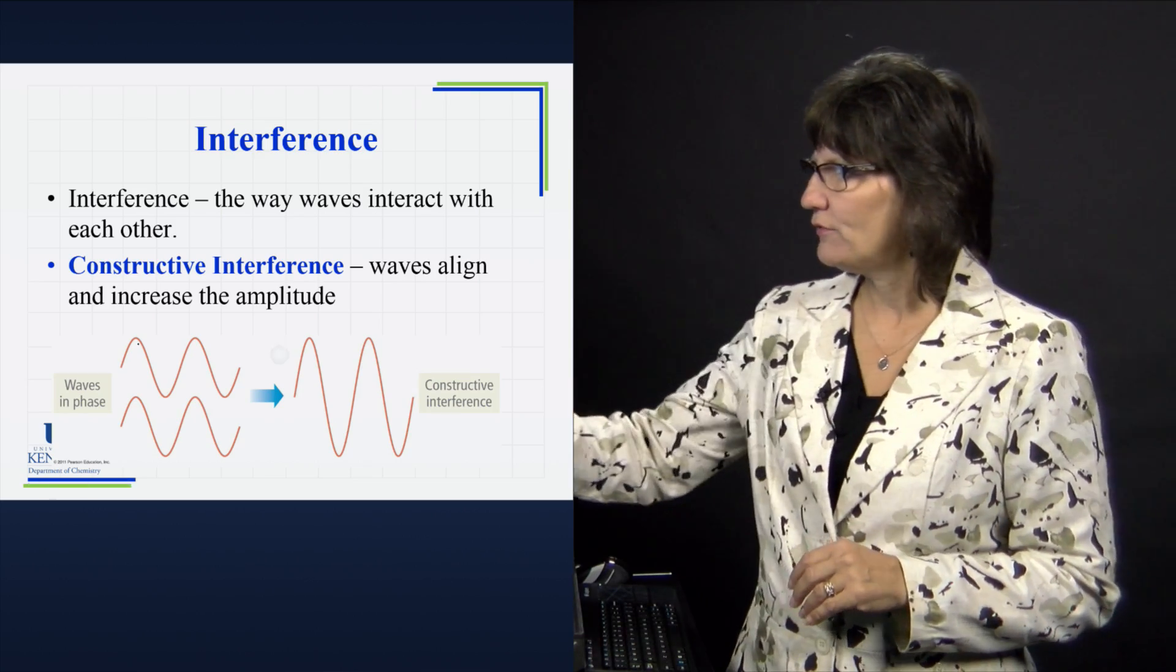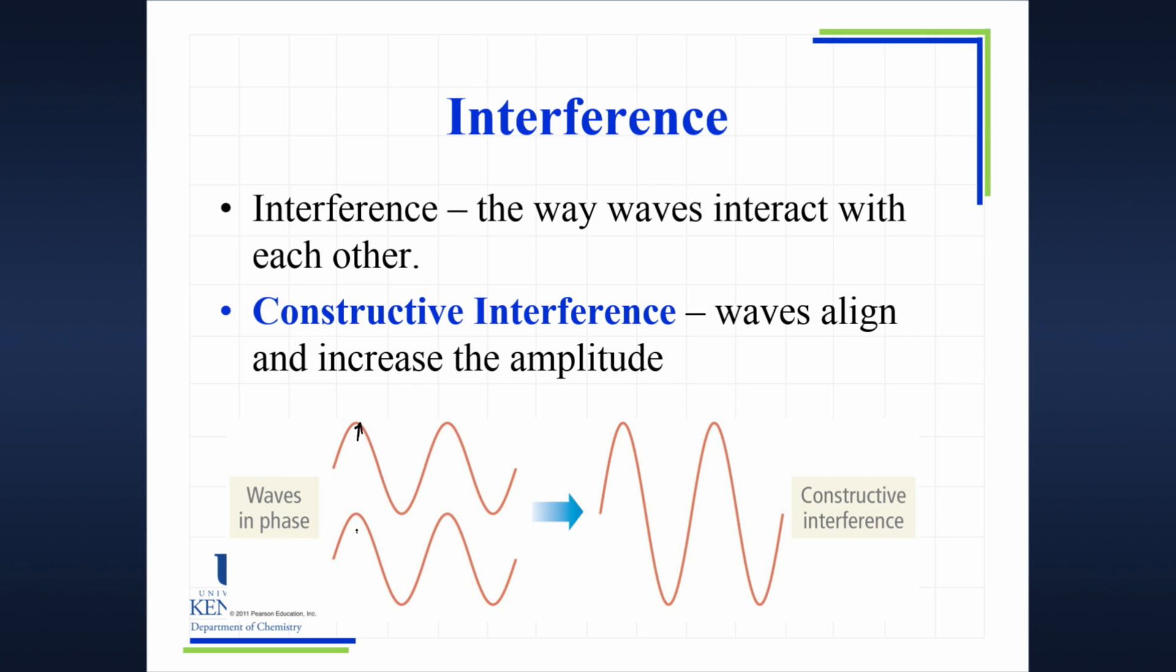We say that they're in phase. So we see the peak of this wave and the peak of this wave are aligned. The trough of this wave and the trough of this wave are aligned. And what will happen is, it's an additive property where the amplitude will be increased. So now we have a wave with a higher amplitude and a lower trough when they interfere like that. And this is called constructive interference.